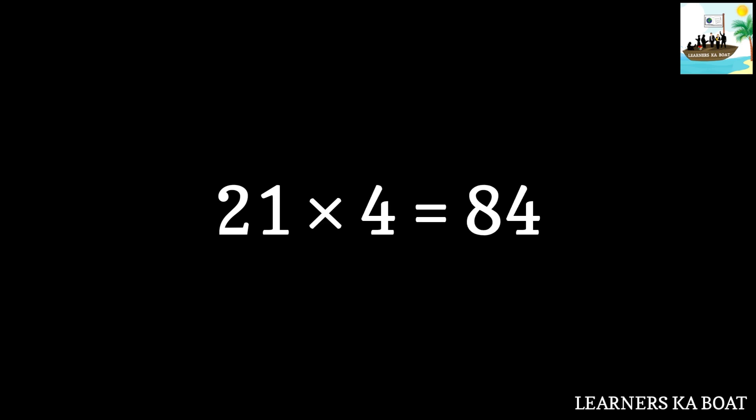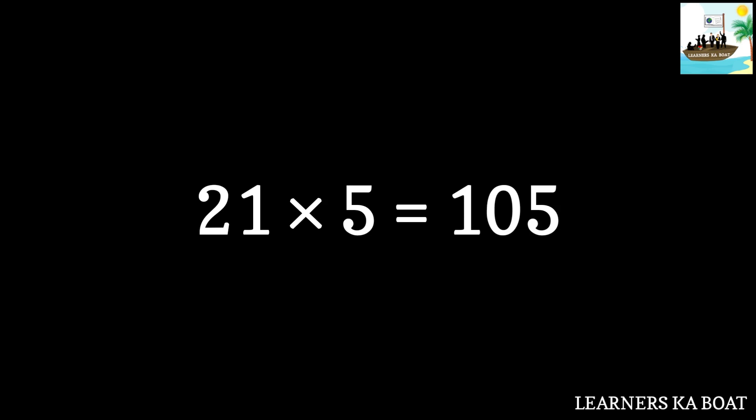21 fours are 84. 21 fives are 105. 21 sixes are 126.